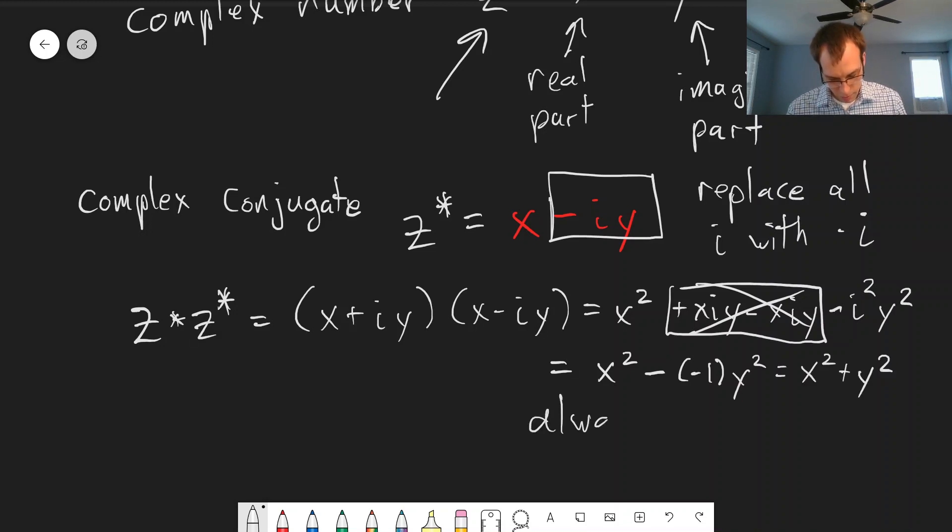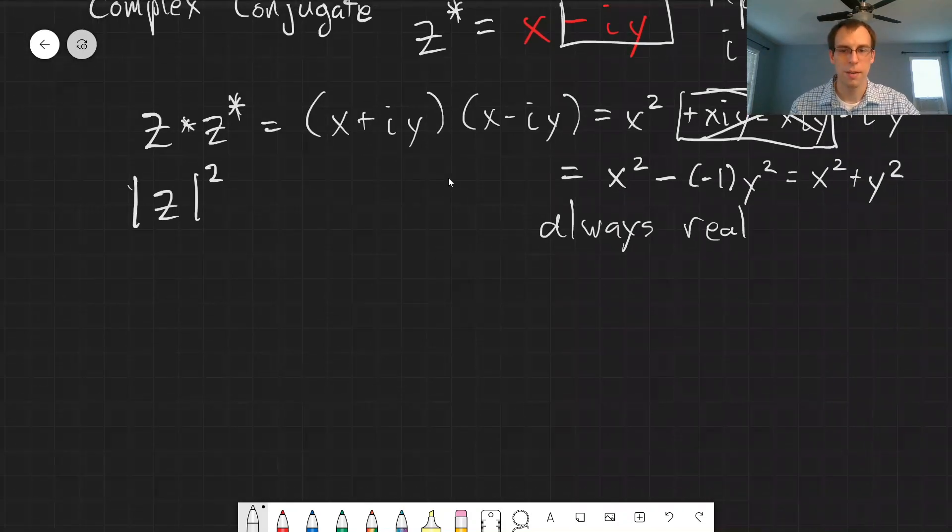We'll get x squared minus negative 1 times y squared, or x squared plus y squared. The important point here is that this is always a real number. Our imaginary part always gets multiplied out in a complex number times its complex conjugate. We can write this as an absolute value squared notation, which means a complex conjugate.